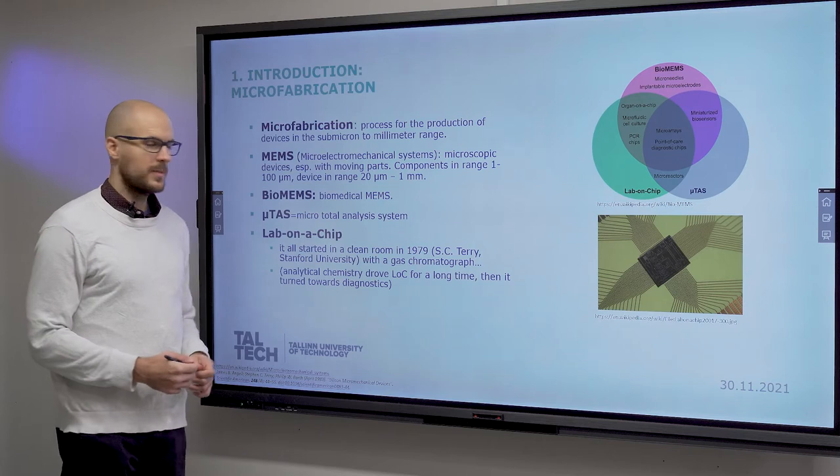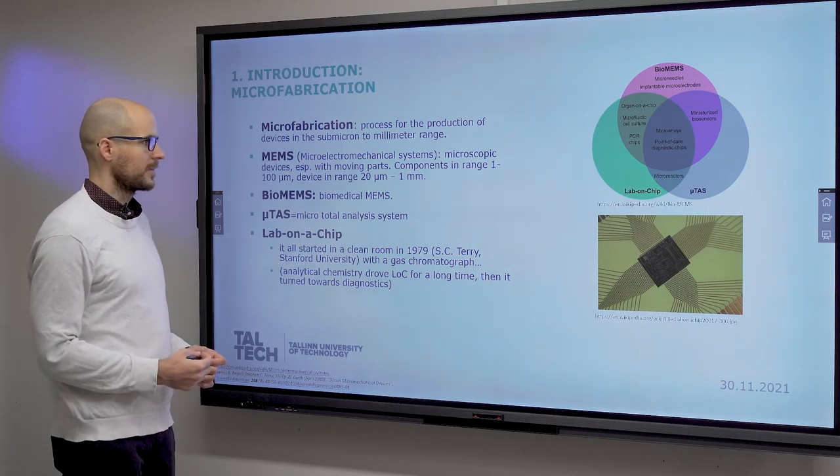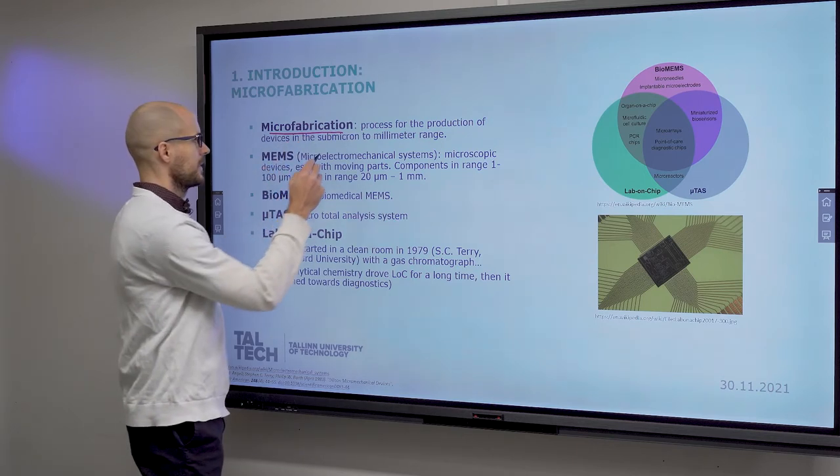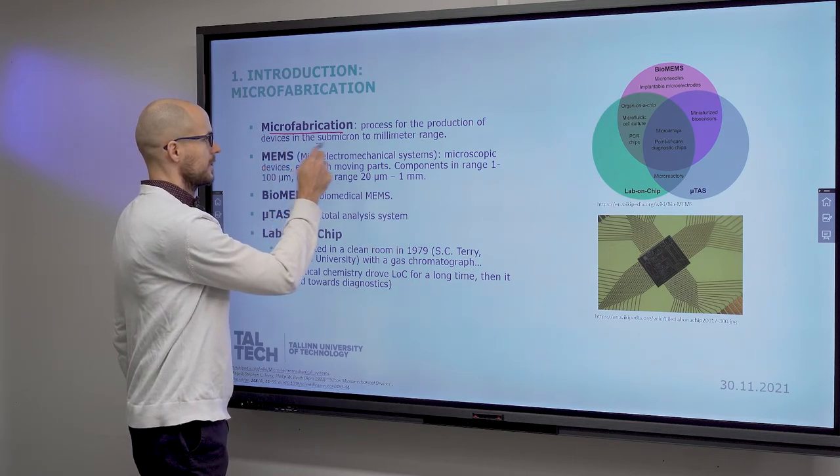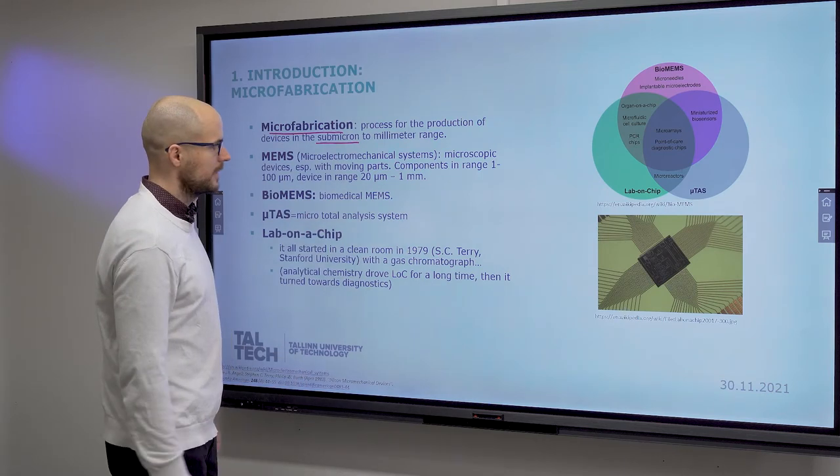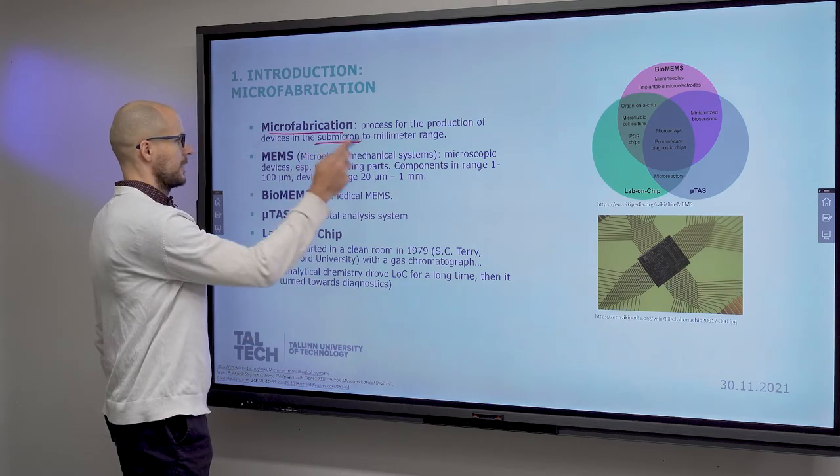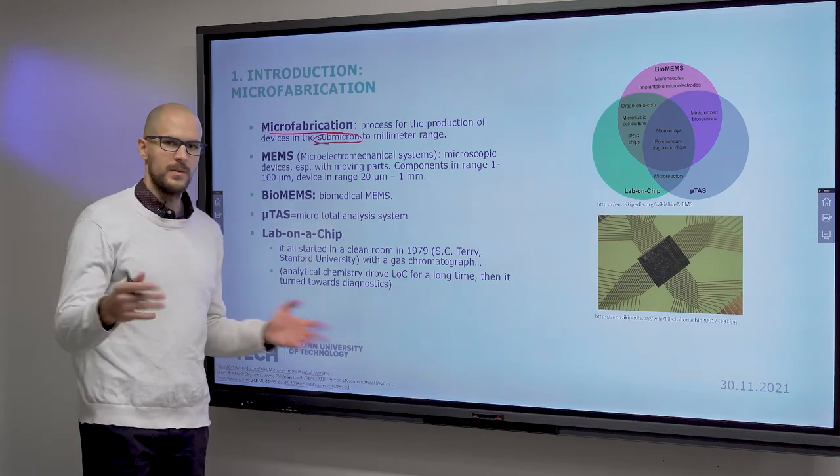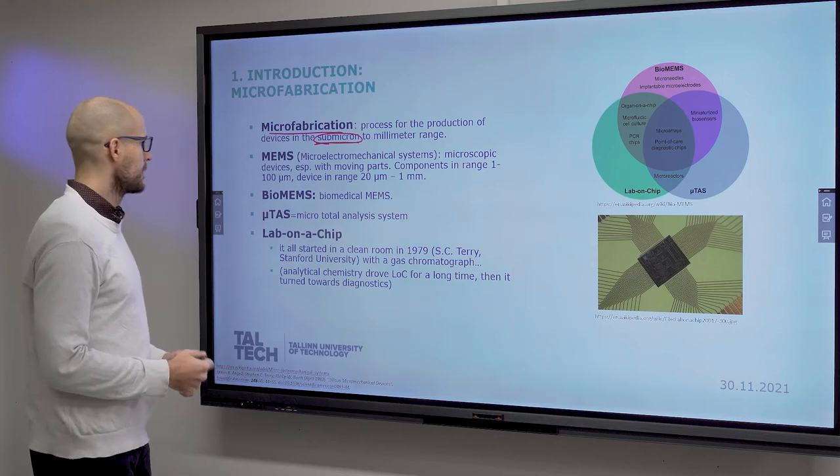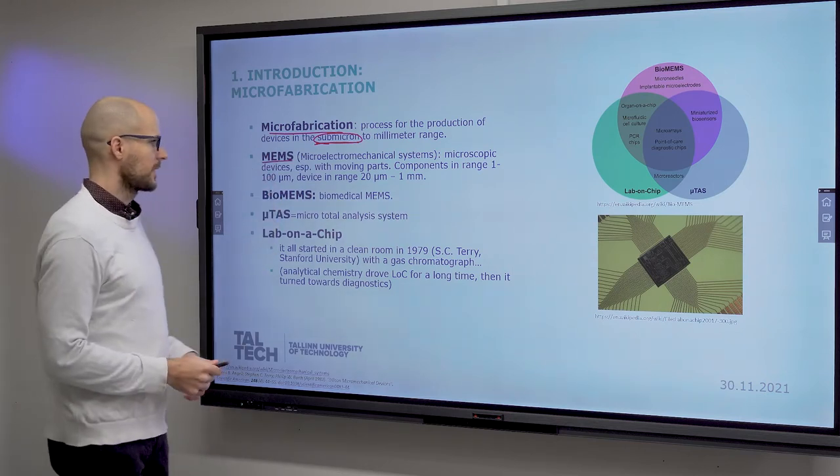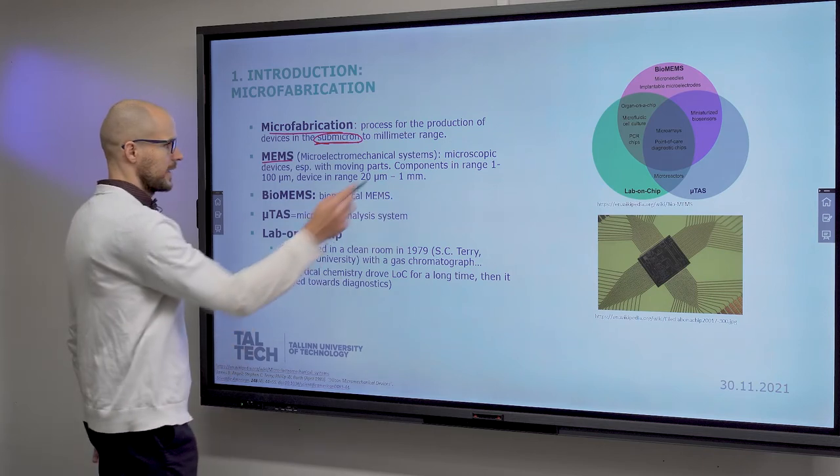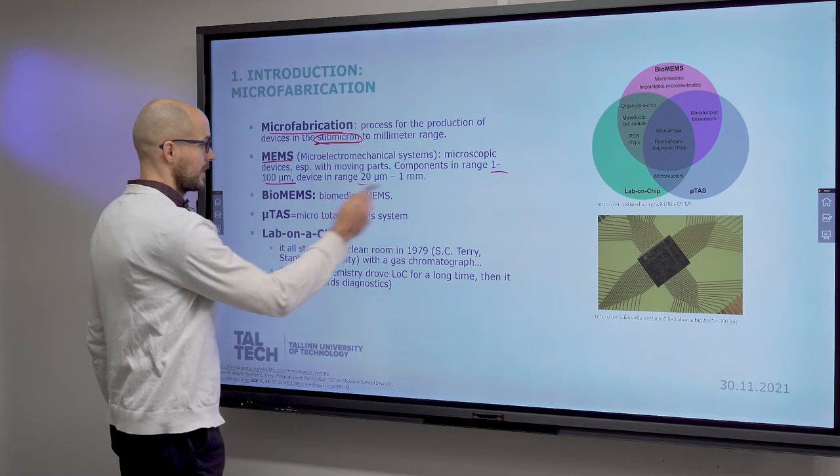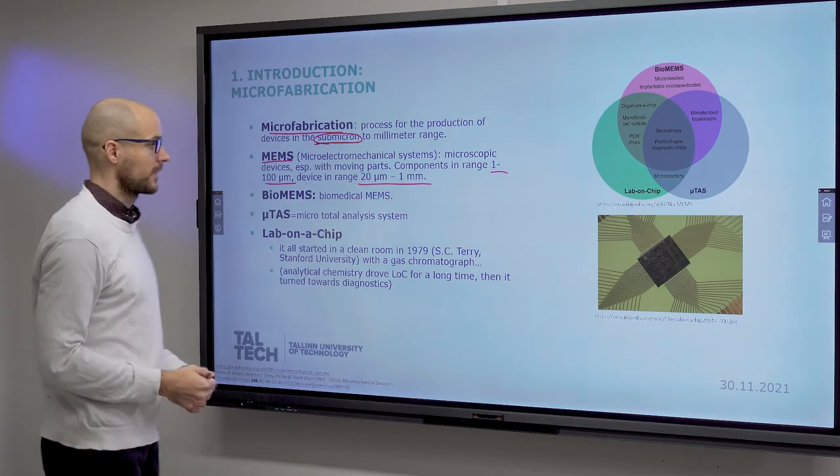This we have already talked about. But just as a reminder, microfabrication produces equipment in submicron to millimeter range. But we focus on submicron and up to a couple hundred microns. MEMS, microelectromechanical systems, size range 1 to 100 microns. And the devices range from 20 microns to 1 millimeter.